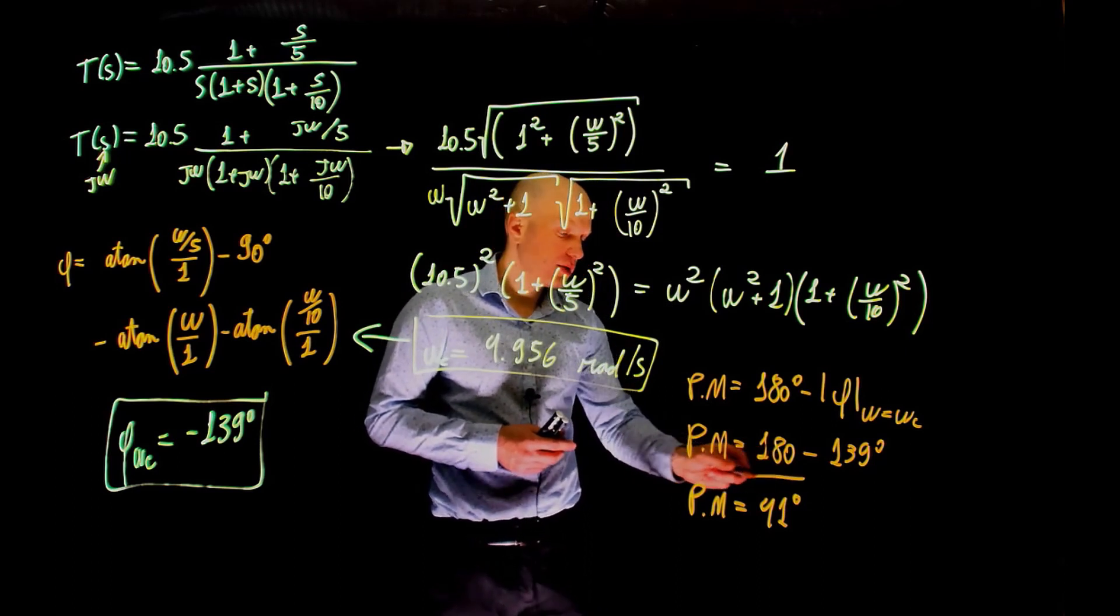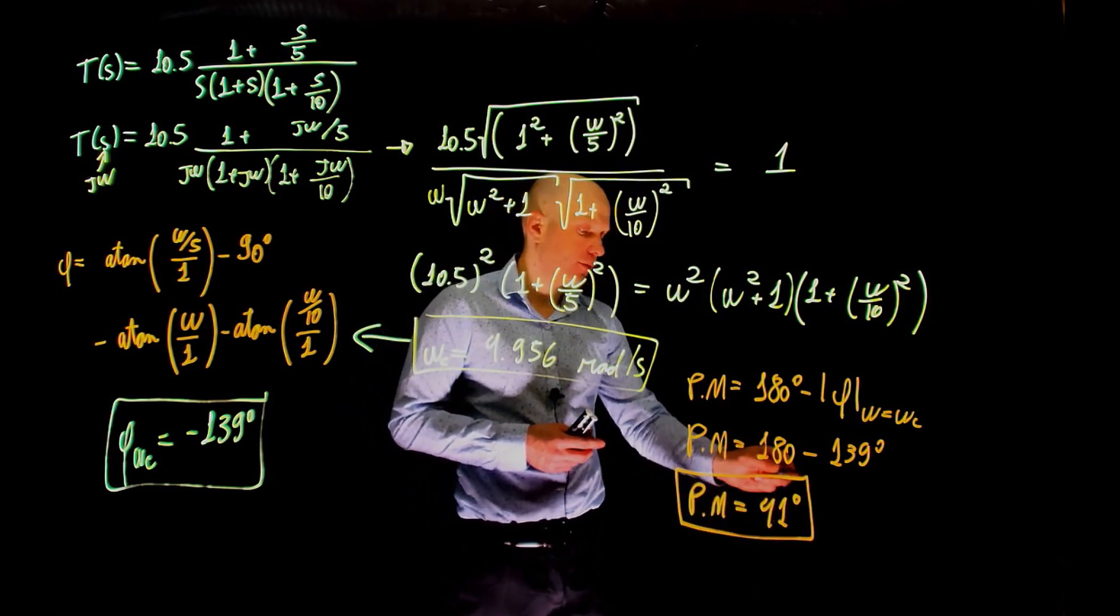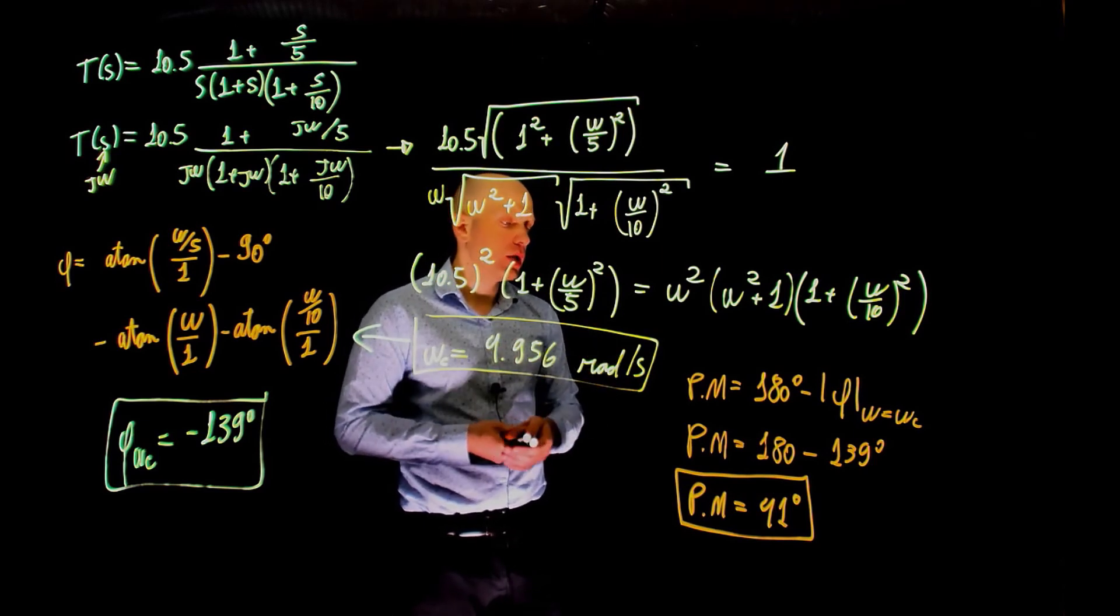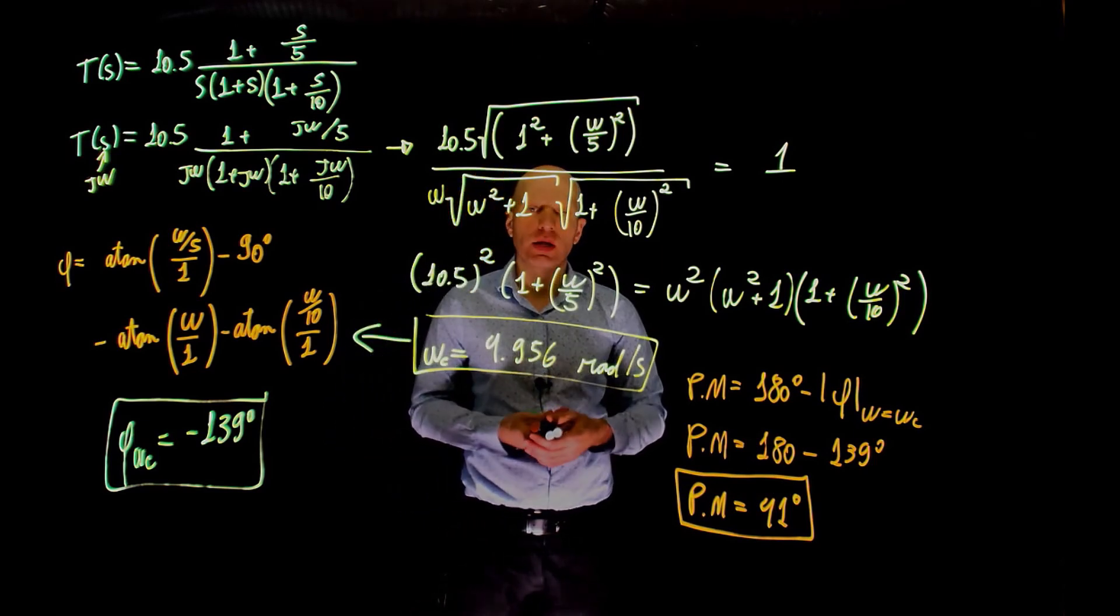So this means that the phase can be increased by 41 degrees without changing the magnitude of the transfer function and the system would still be closed loop stable.